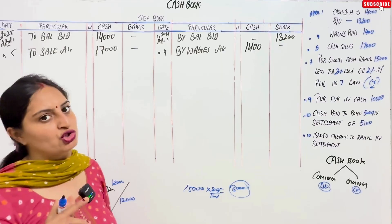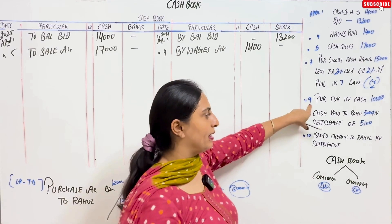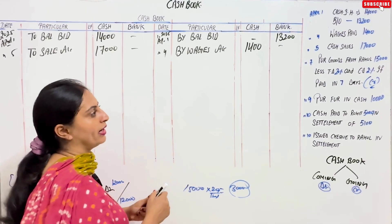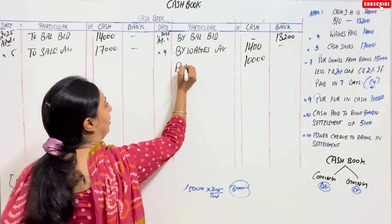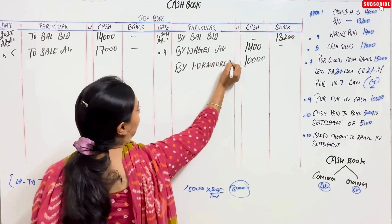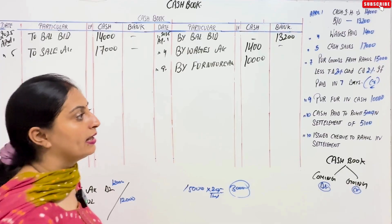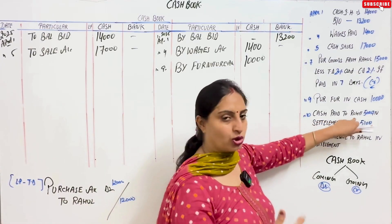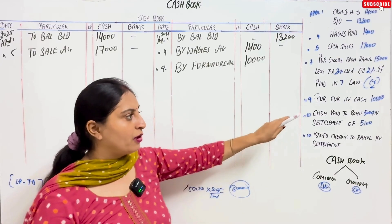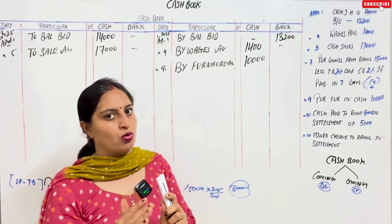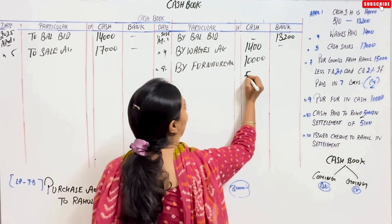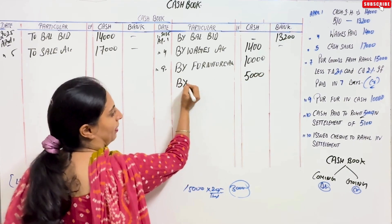We show the trade discount in the journal to reduce the purchase price. April 9: purchase furniture for cash — cash is going out, so credit side entry. We write ₹10,000 and the narration 'Buy Furniture.' Note: the word 'purchase' applies to goods, not fixed assets. Cash paid to Rohit ₹5,000 in settlement of his account ₹5,100. We enter ₹5,000 on the credit side and write 'By Rohit.'